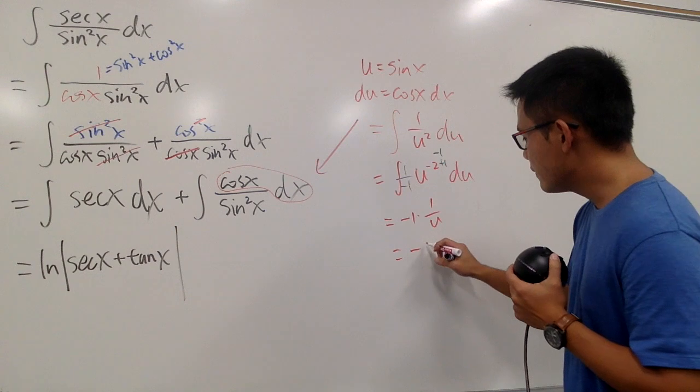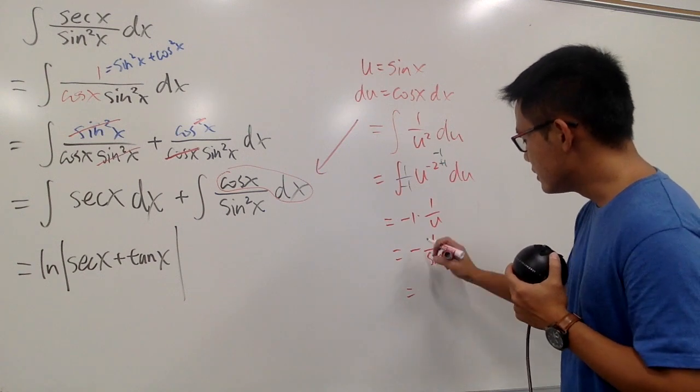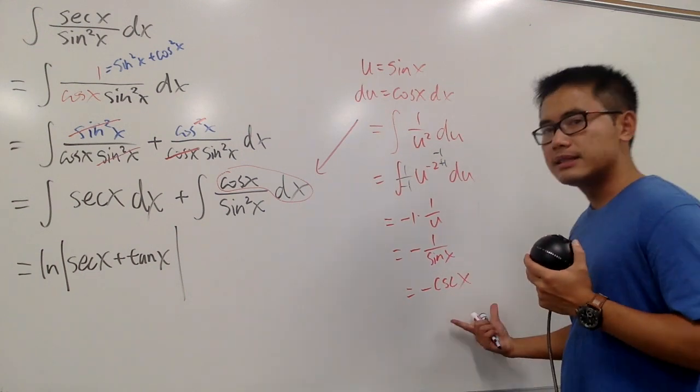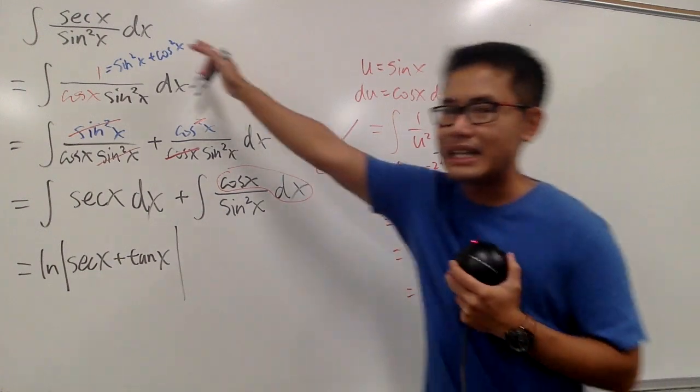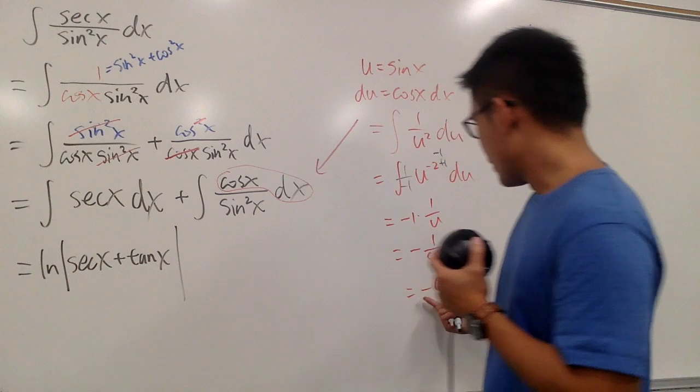So, we have negative 1 over sine x, which you know this is negative, called secant x. I didn't put on plus c, because this is not the integral that I want to solve. That is, right?